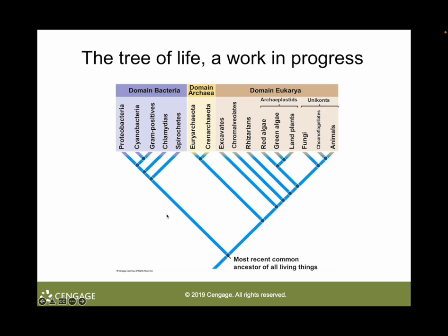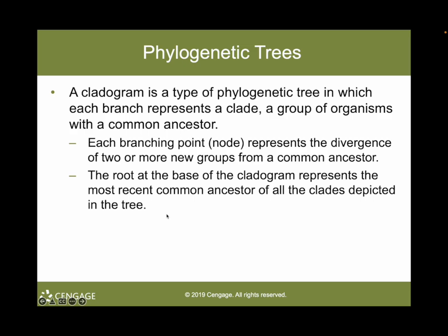Each type of phylogenetic tree used in this book is called a cladogram. Each branch in a cladogram represents a clade, which is a group of organisms with a common ancestor, and each branching point — referred to as a node, depicted by a circle — represents the divergence or splitting of two or more groups from a common ancestor. Thus the node represents the most recent common ancestor of each clade depicted by the branches. A cladogram uses positions of branch points to illustrate hypothesized evolutionary relationships among taxa.